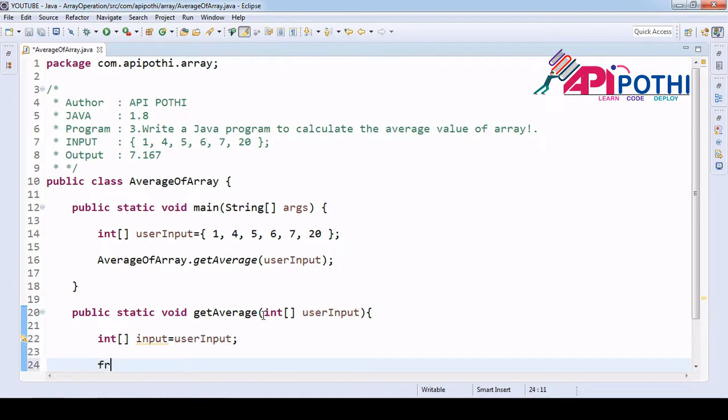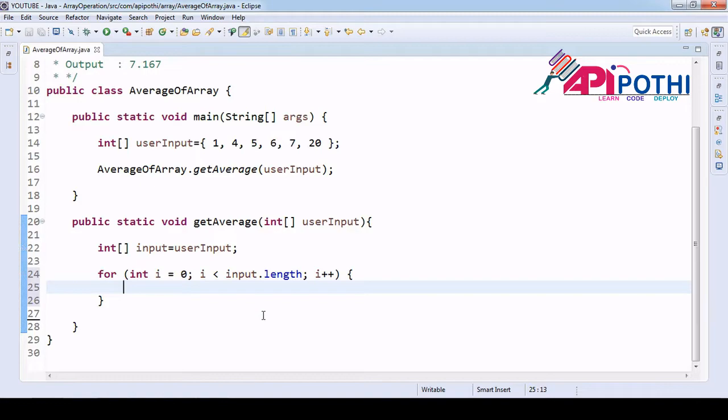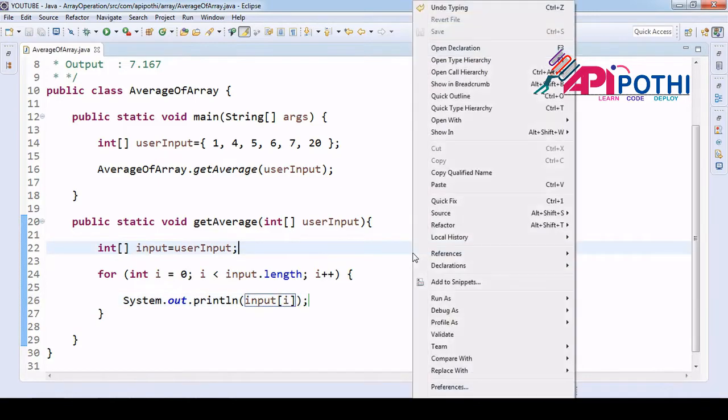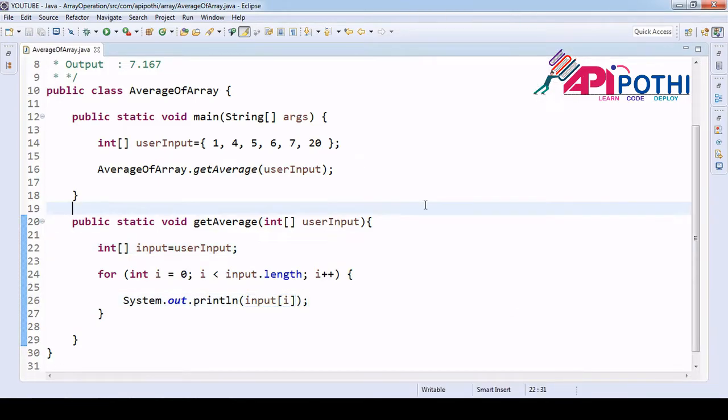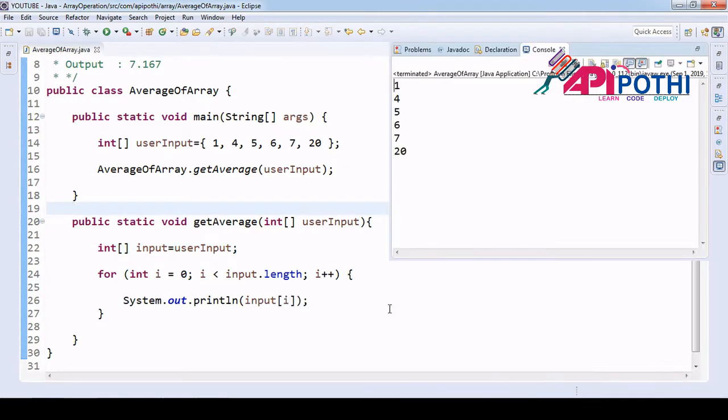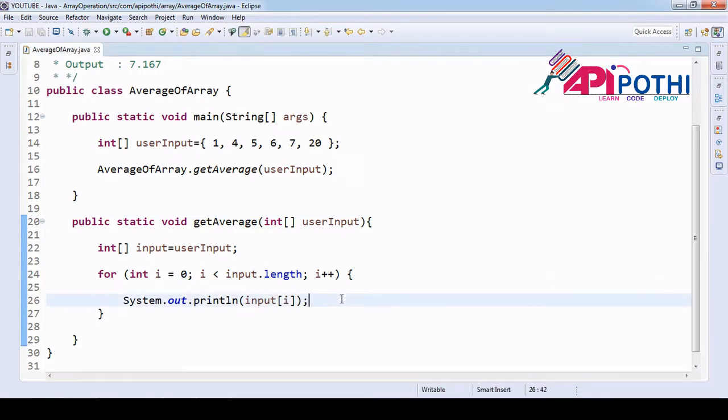Now let's have a for loop. This always helps us to scan the array. Now we scan. Just to make sure that we are scanning right and the value is coming, let this program run to see whether the value is coming properly or not. Yeah, value is coming: 1, 4, 5, 6, 7, and 20. Perfectly fine.